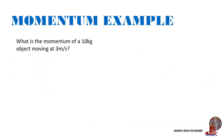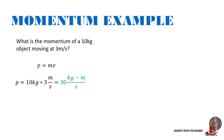Let's check some examples of momentum. What is the momentum of a 10-kilogram object moving at 3 meters per second? With the formula p equals mv, we can directly substitute all given values: 10 kilograms times 3 meters per second, which equals 30 kilogram meters per second.